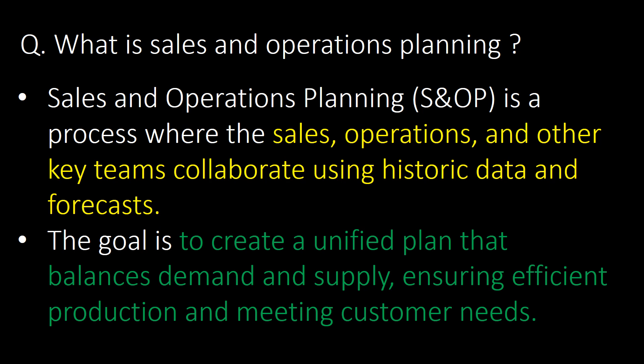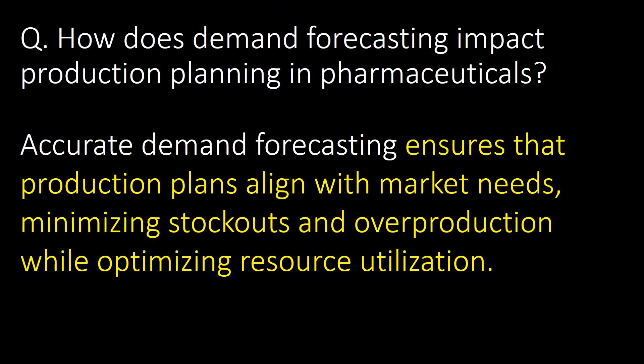The goal of S&OP is to create a unified plan that balances demand and supply, ensuring efficient production and meeting customer needs. Accurate demand forecasting ensures that production plans align with market needs, minimizing stockouts or overproduction while optimizing resource utilization.